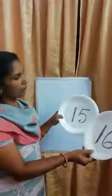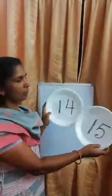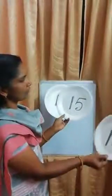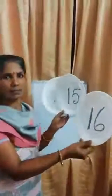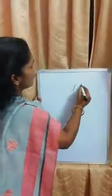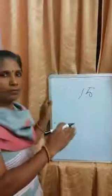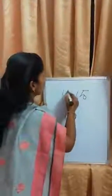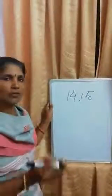See, 16 — the before number is 15. And 15 — the before number is 14. So 14 is the before number of 15. The order is 14, 15, 16. Before means just before, just parallel. The before number of 15 is 14.